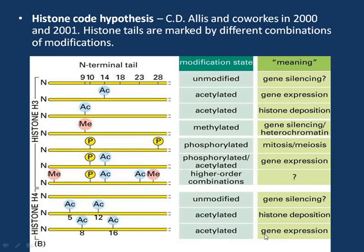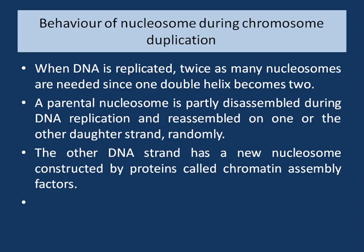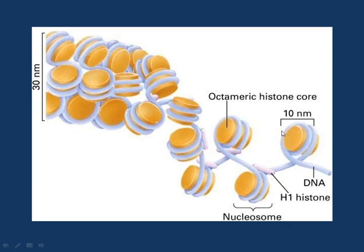Regarding the behavior of nucleosomes during chromosome duplication: when the DNA is replicated, twice as many nucleosomes are needed because one duplex has become two. A parental nucleosome is partly disassembled during DNA replication and reassembled on one or the other daughter strand randomly. The other DNA strand has new nucleosomes constructed by proteins called chromatin assembly factors. So when DNA replicates, nucleosomes also disassemble and reassemble during DNA replication. The nucleosome has a diameter of 10 nanometers, and nucleosomes are arranged in a zigzag manner to form the 30 nanometer fiber.